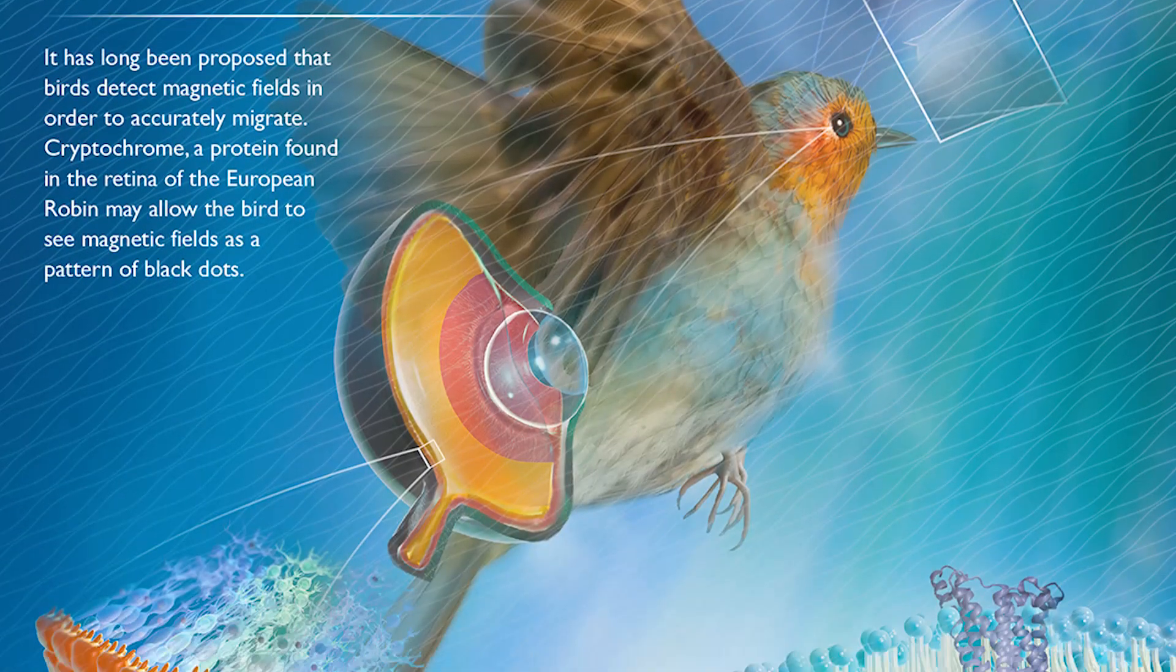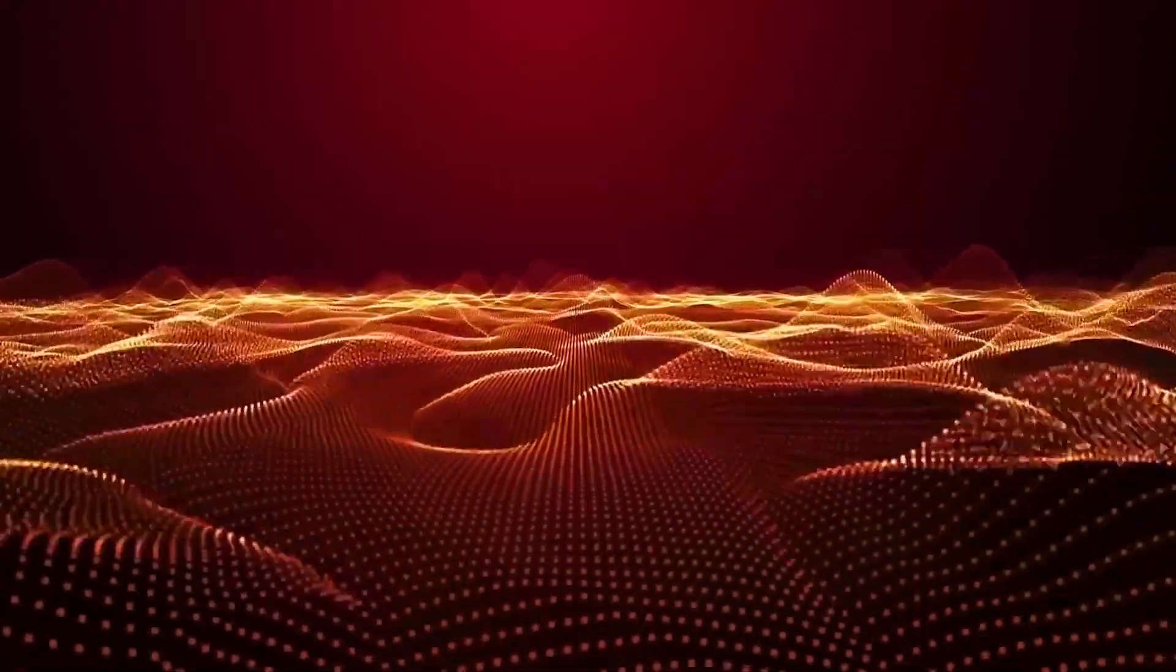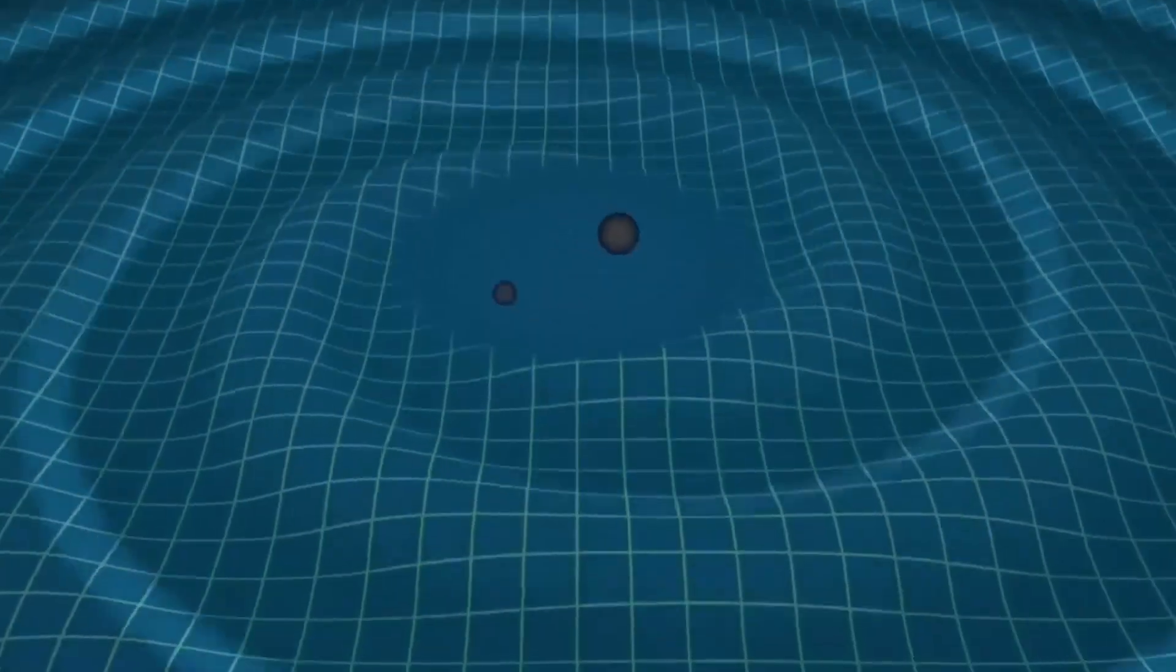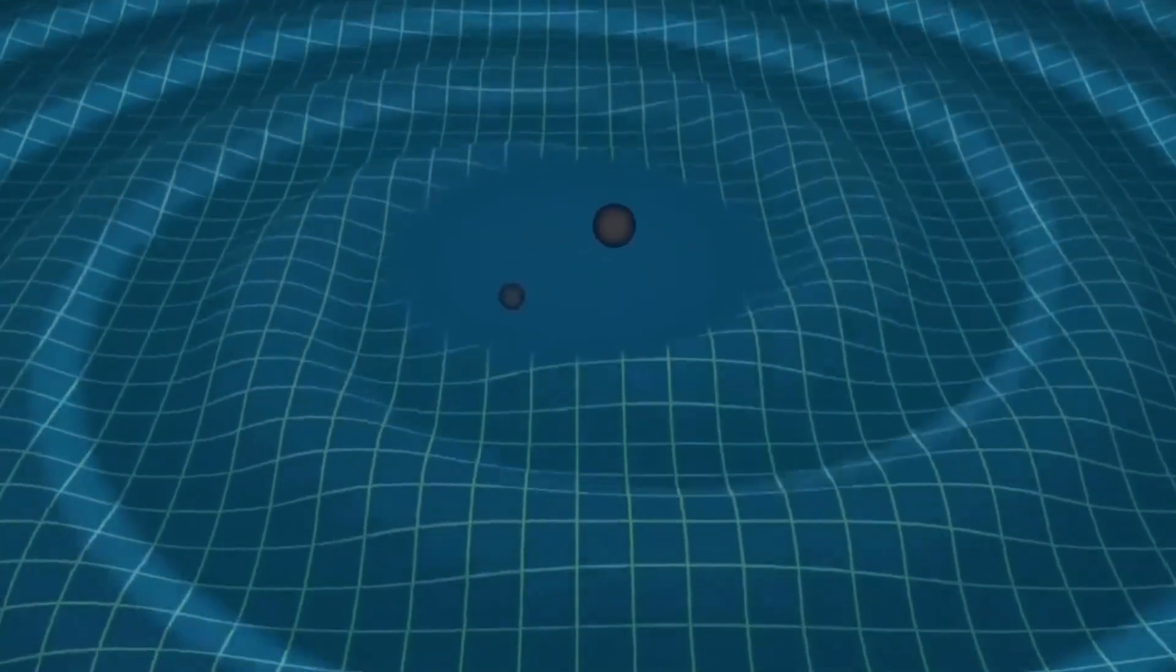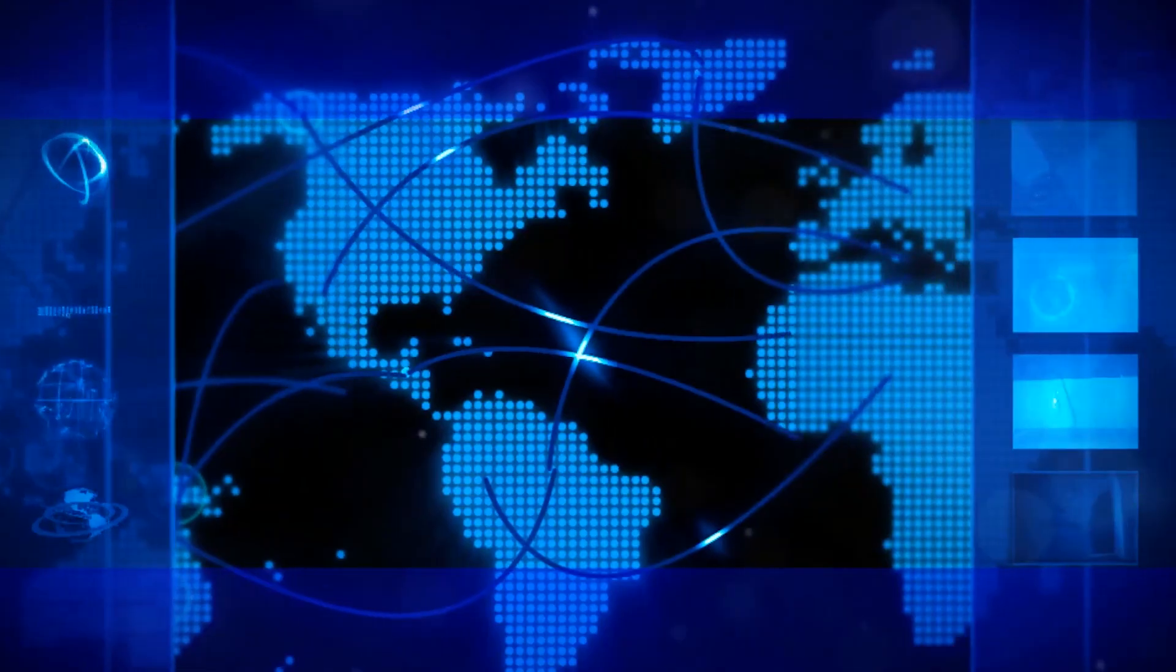This biological quantum sensing is inspiring a new generation of ultra-sensitive magnetic field detectors. Researchers at the University of Oxford are developing quantum sensors based on the radical pair mechanism that could be used in navigation systems, medical imaging, and geological surveys.